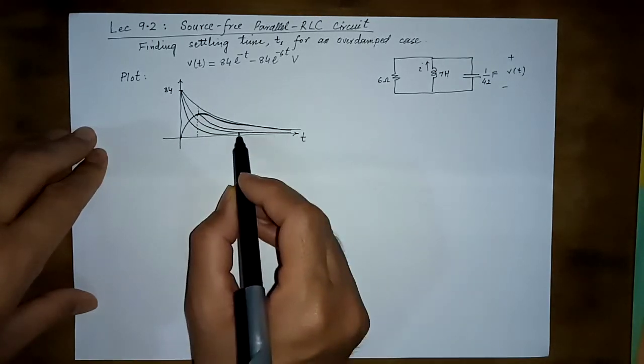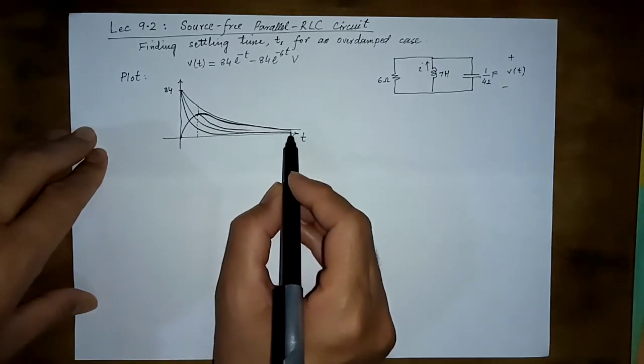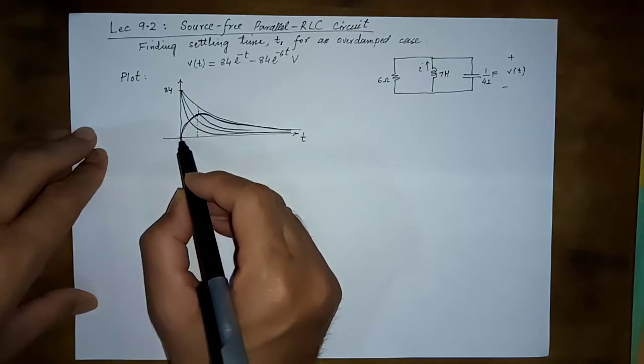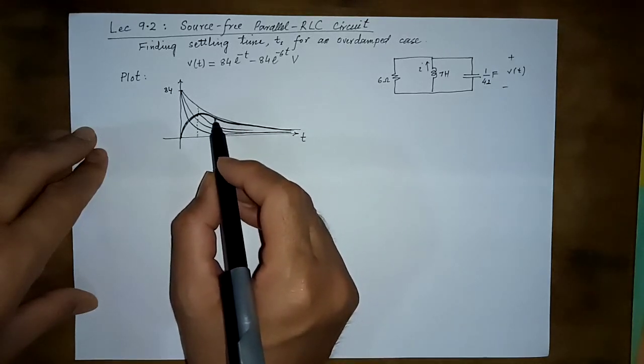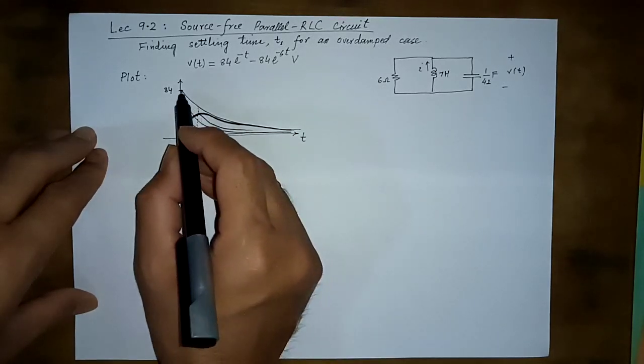It will start decaying and matching this term because this will decay and become closer to zero. This will be the ultimate equivalent vt, something like this. This is a very approximate curve, this is a plot of vt.